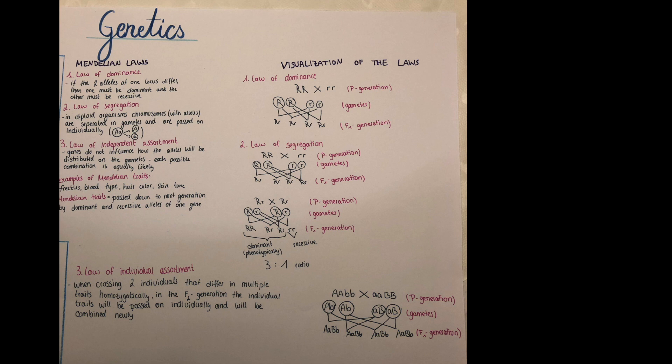Now here in the picture you can see the visualization, so the crossing schemes of the laws. And in the first one, in the law of dominance, I crossed two homozygotic individuals. So in the P generation, in the parental generation, you can see a homozygotic dominant and a homozygotic recessive individual, which are crossed.